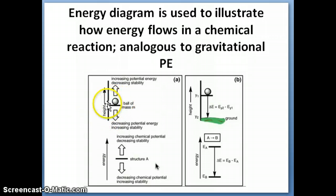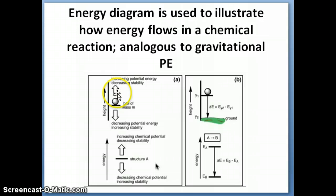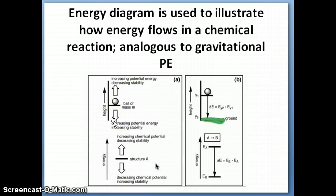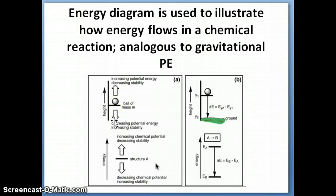When we talk about potential energy, we can represent a ball placed at different heights depending on what its potential energy is. If it's at a higher position, it has more potential energy; if it's at a lower height, it has less. Gravitational potential energy equals m times g times h, so the closer to the ground (h near zero), the lower the potential energy, and the further away, the higher the potential energy.